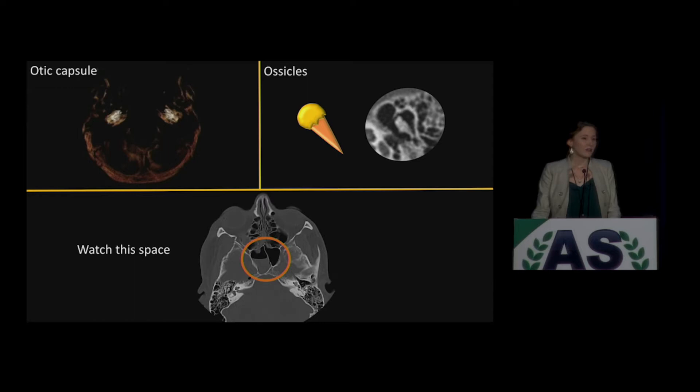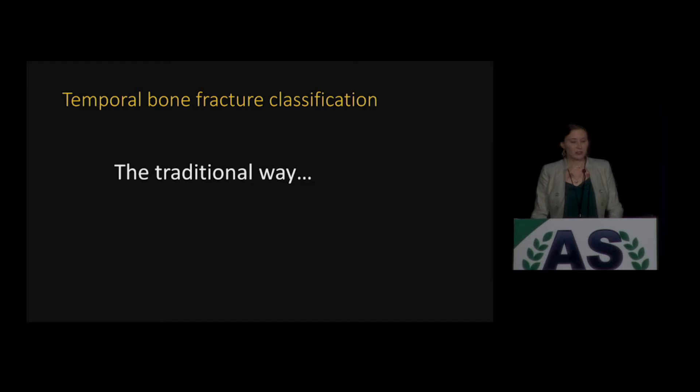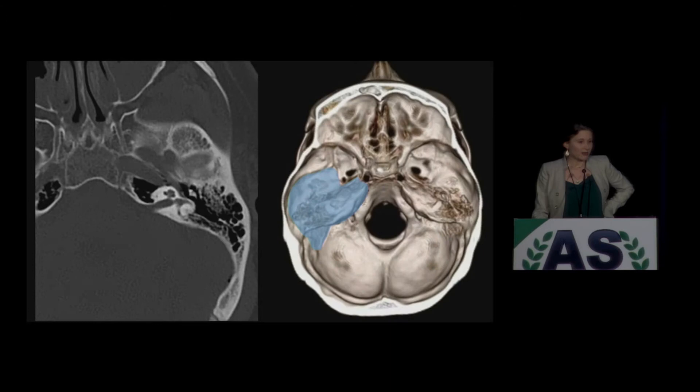Here are the objectives for today: the otic capsule, the ossicles, and watch this space. The temporal bone has five parts — we're not going to cover too much of those today. These are in your handout for your reference if you want to study the components of the temporal bone. What we are going to talk about today is temporal bone fracture classification. First, we're going to talk about the traditional way to classify temporal bone fractures.